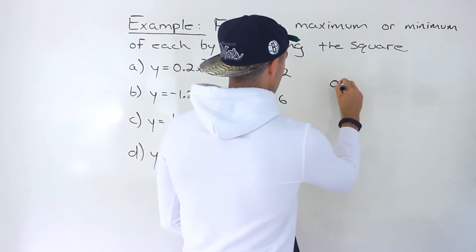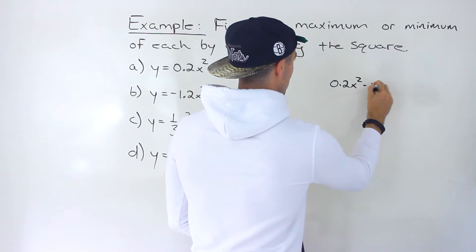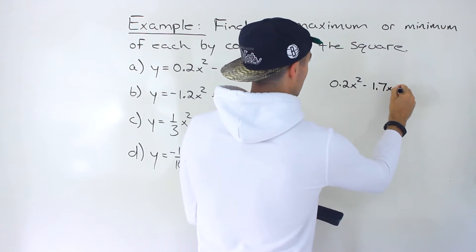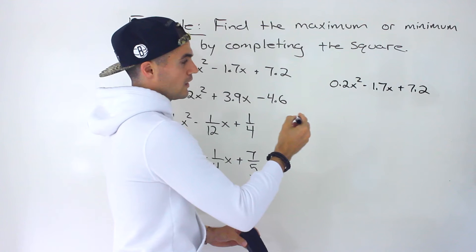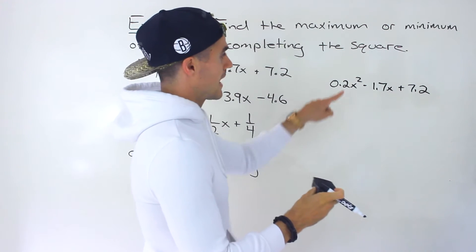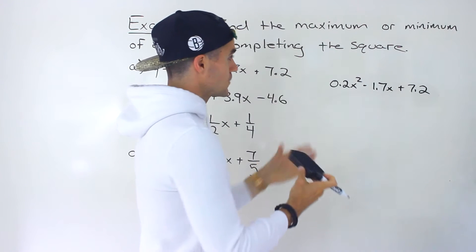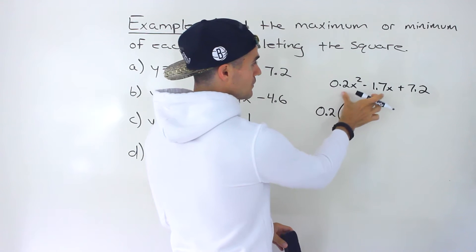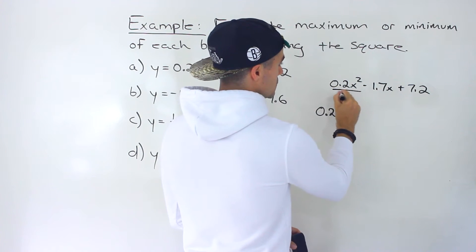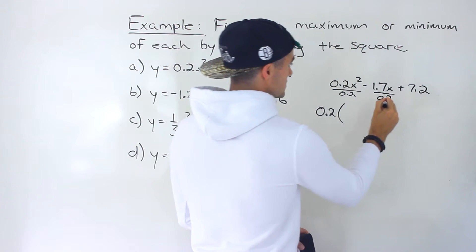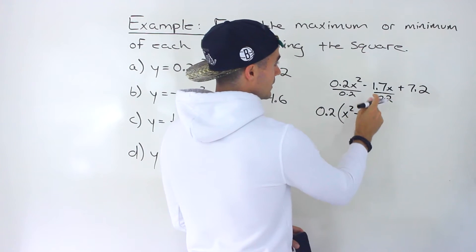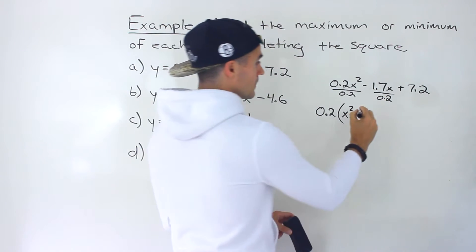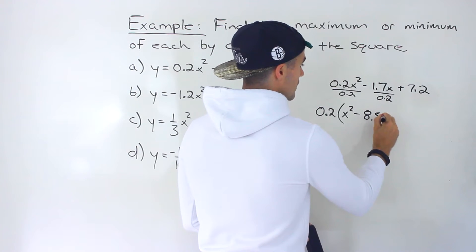Let's start with the first quadratic — part a — which is 0.2x² minus 1.7x plus 7.2. The first step: notice we have an 'a' value in front of x², so we have to factor that out of the first two terms. We divide by 0.2, so we'd end up with x² minus — now 1.7 divided by 0.2, if you do that in your calculator, gives you 8.5x.